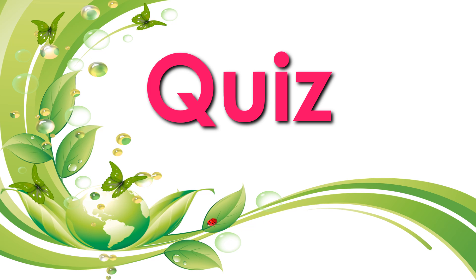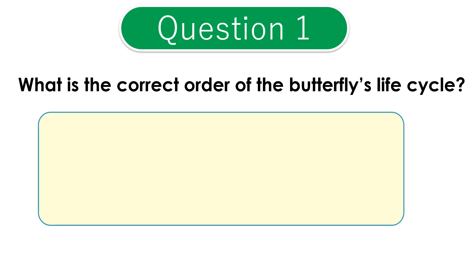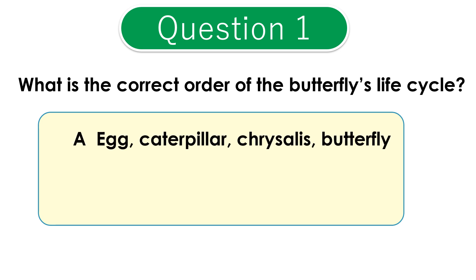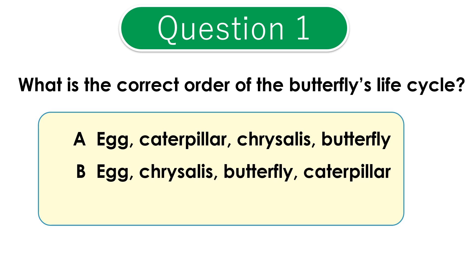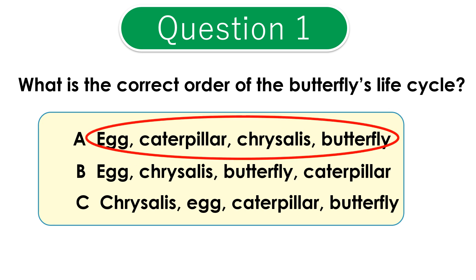It's quiz time! Question 1: What is the correct order of the butterfly's life cycle? A: egg, caterpillar, chrysalis, butterfly. B: egg, chrysalis, butterfly, caterpillar. C: chrysalis, egg, caterpillar, butterfly. The correct answer is A: egg, caterpillar, chrysalis, butterfly.